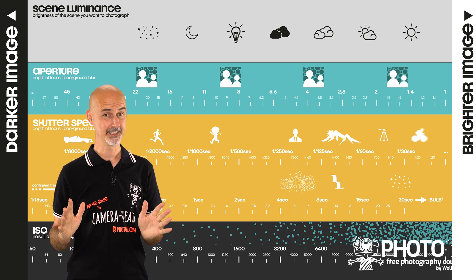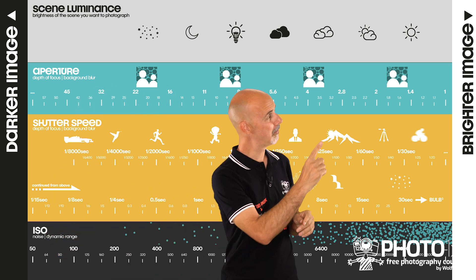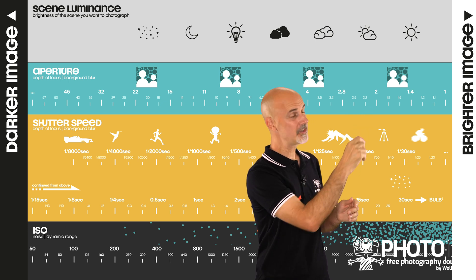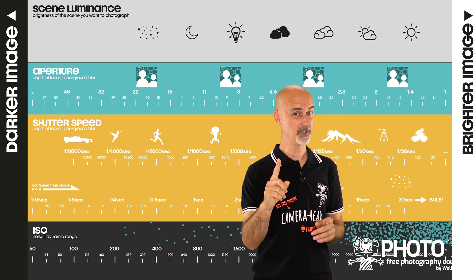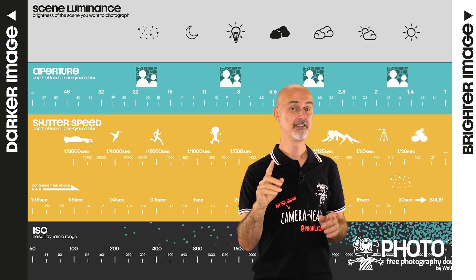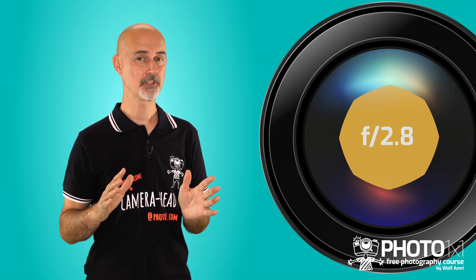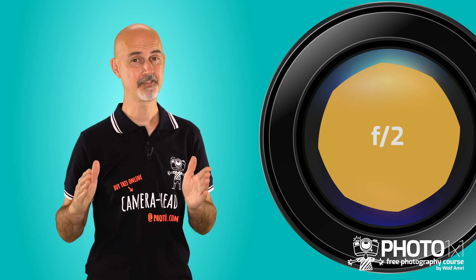Surprisingly, f/2.8 is the next full f-number after the f/2 we started our calculation with. That is pretty cool, right? So f/2.8 has half the aperture size of f/2, and therefore lets half the light in.